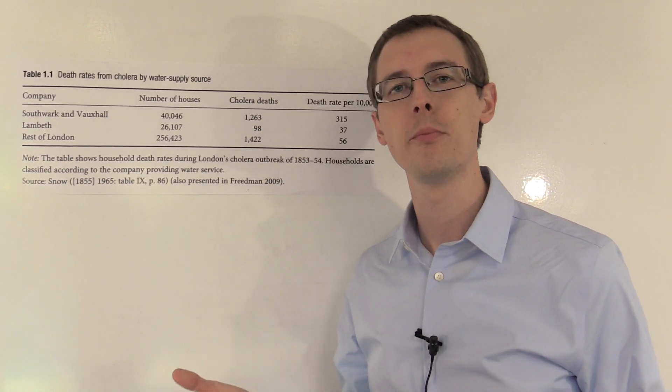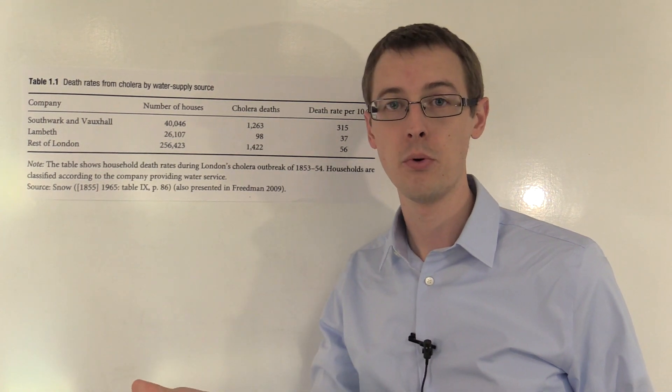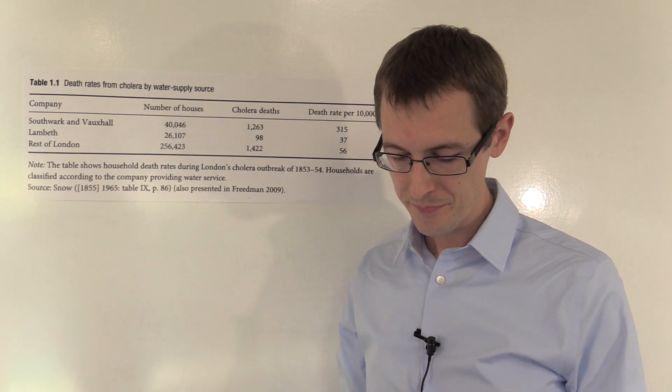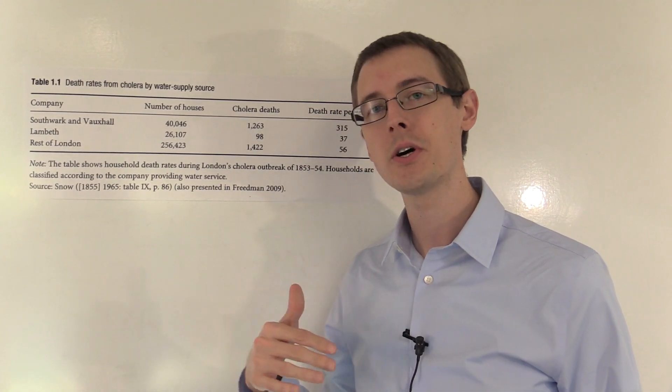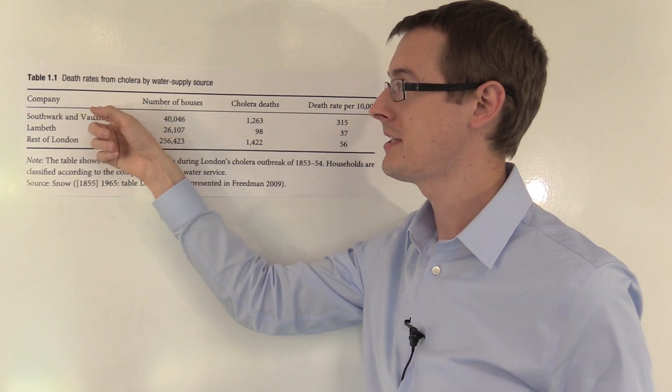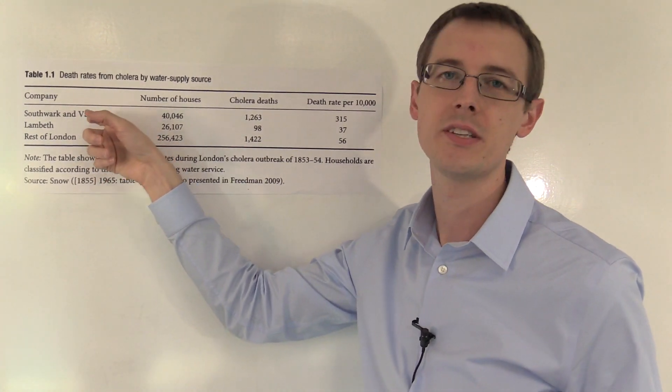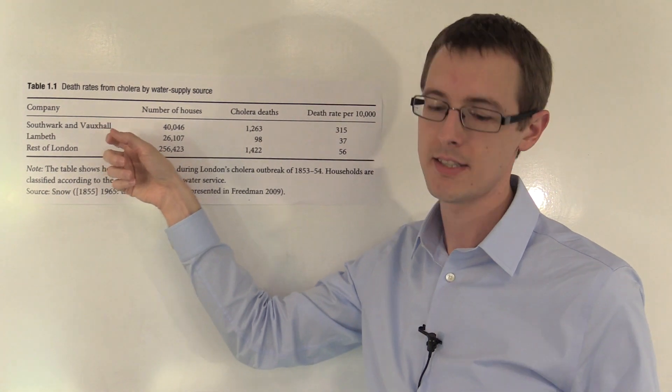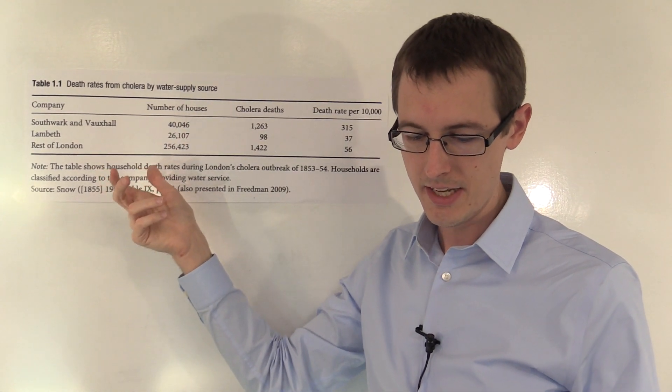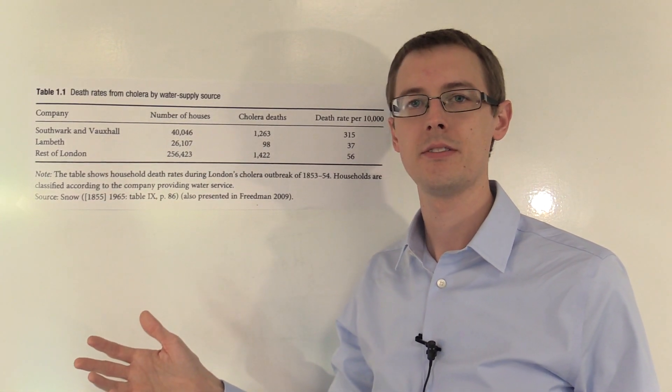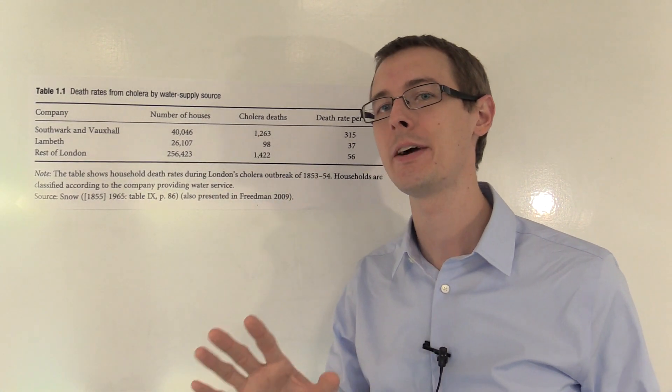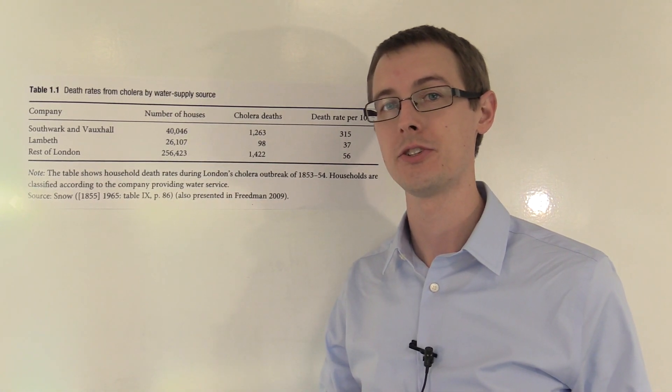He said, we observe some variables about people living in these groups, whether they're rich or poor, whether they're living in a big house or a small house. Are these variables the same across the two groups or not? He says, yes. Basically, the percentage of rich people in Southwark and Vauxhall is the same as in Lambeth. The percentage of poor is the same in each group. The percentage of large houses is the same in each group. And the size of the house, the condition of the house, there's no difference. So, he's checked that we have balance on observables, which is exactly what you would see if you had true randomization.